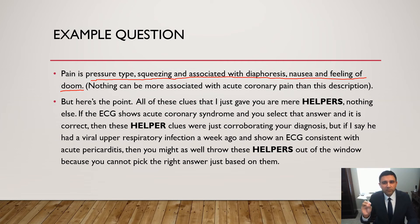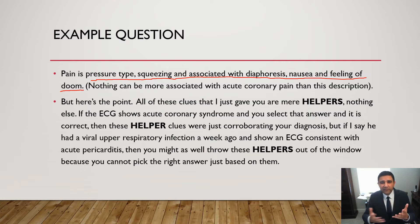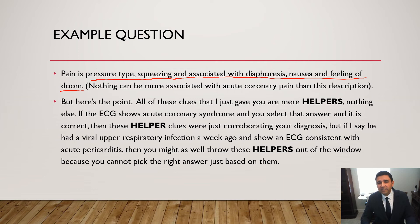But here's the point — all of these clues are mere helpers, nothing else. If the ECG shows acute coronary syndrome and you select that answer and it is correct, then these helper clues were just corroborating your diagnosis. But after giving you all this data, if I say he had a viral upper respiratory infection a week ago and I show you an ECG consistent with acute pericarditis — you might as well throw these helpers out the window, because you cannot pick the right answer based on them alone.